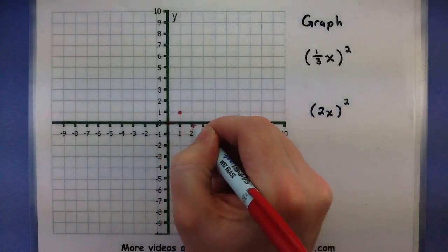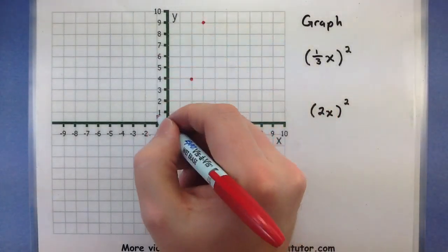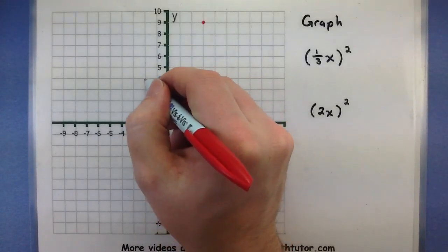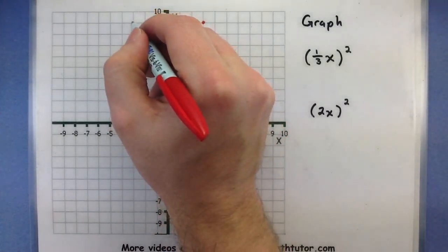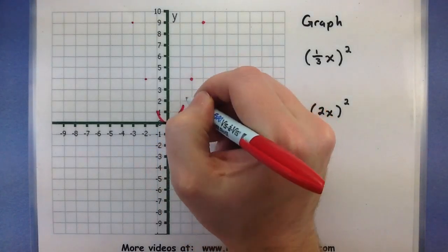So 0, 0, 1, 1, 2, 4, 3, 9, and we got those same points over here, so 2, 4, negative 3, 9, not bad. This will produce the familiar parabola shape.